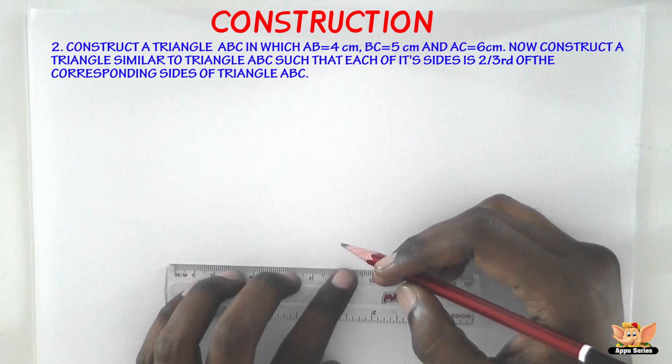Now the first step is to construct the triangle of which the measurements were given. So let us construct that triangle first and then construct the triangle similar to this triangle in which the sides are 2/3 corresponding to the sides of the triangle that we are going to draw now.